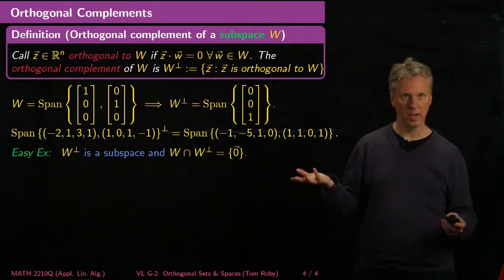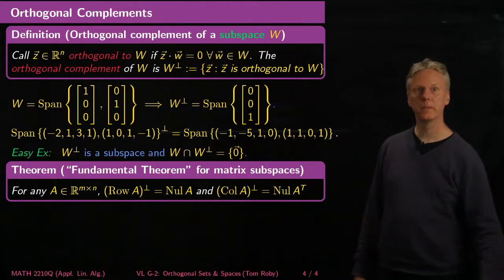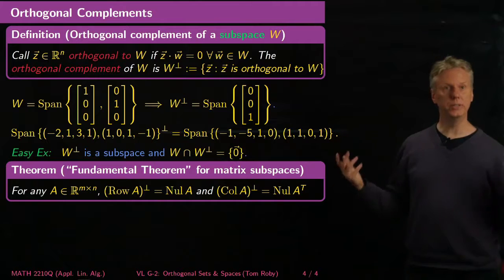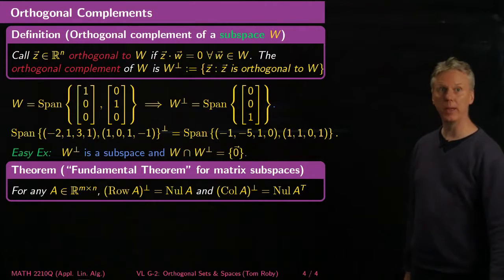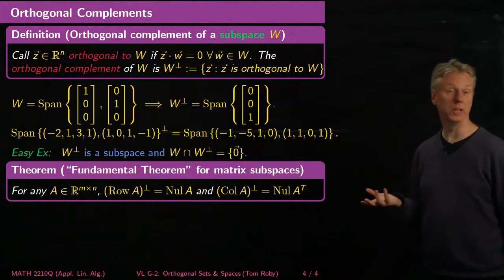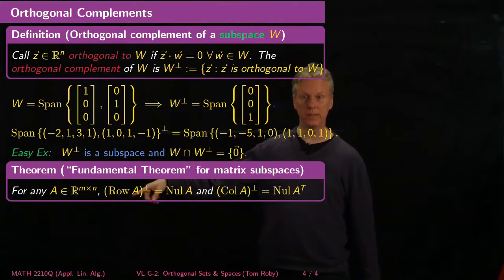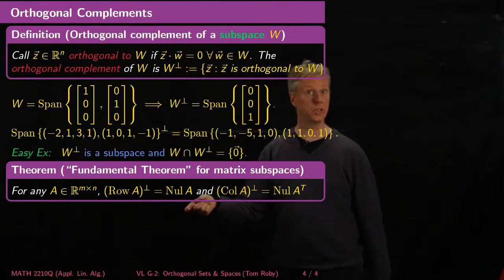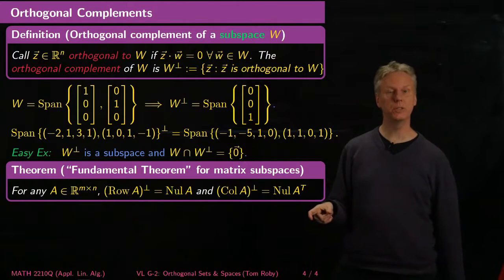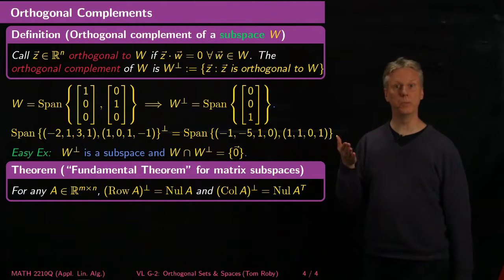Here's a theorem that Gil Strang — the grand old man of linear algebra still teaching at MIT, whose videos are on the web and whose book I recommend — calls one of the fundamental theorems of linear algebra. It states that the orthogonal complement of the row space of a matrix is the null space, and the orthogonal complement of the column space of a matrix is the null space of A transpose.